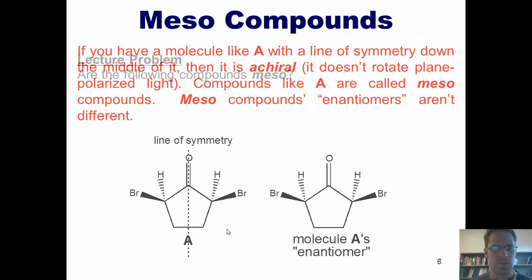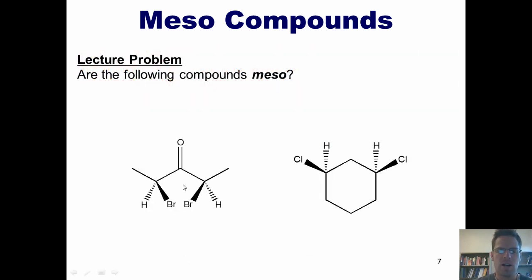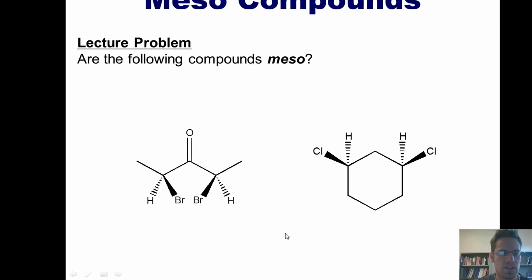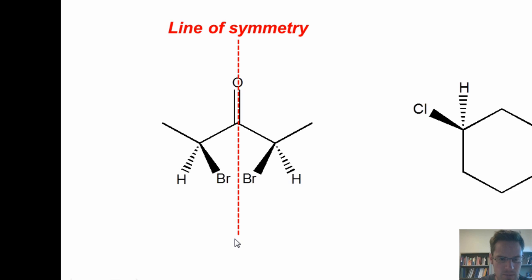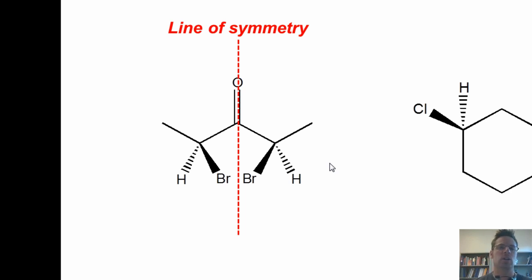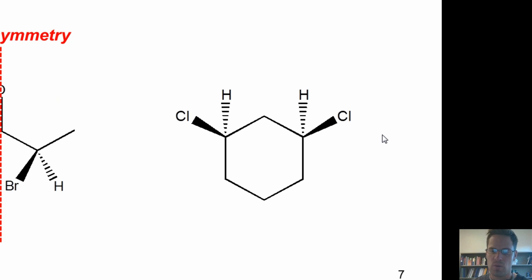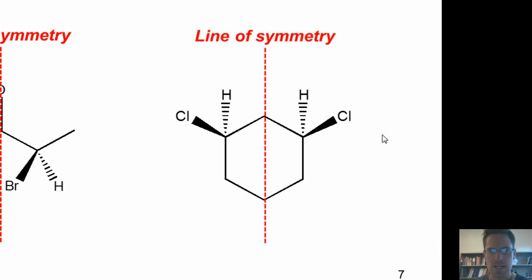Let's test your knowledge by looking at a few examples. Are the following compounds meso? Looking at the molecule to the left, if we draw a line of symmetry down the middle, everything on the left side of that line looks like the mirror image of everything on the right side. Thus the enantiomer would look exactly like the original molecule — this compound is absolutely meso and achiral; it would not rotate plane-polarized light. By similar argument, the molecule to the right also has a line of symmetry; it is meso and achiral.